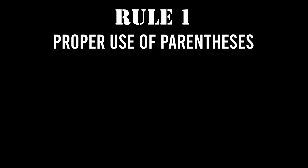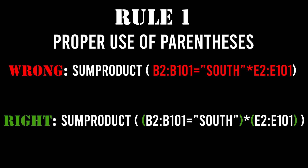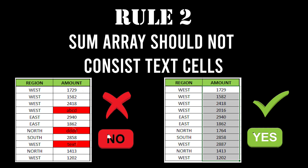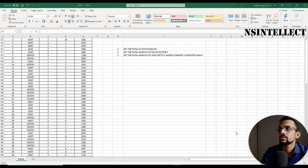The first rule is proper use of parentheses, which means each and every array used should be in individual open and close parentheses. Improper use of parentheses will lead to a value error. The second rule is the SUM array should not consist of text. As you can see in the table appearing on the screen, if your SUM range consists of text, it will result in a value error. So let's get started.